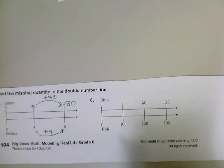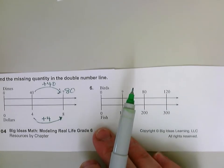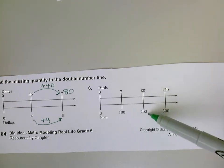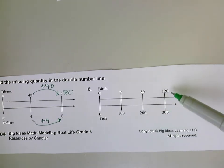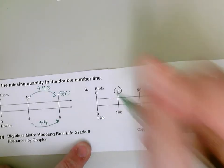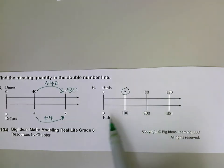Okay, let's take a look at birds to fish. Birds to fish. It looks like for every 80 birds, there's 200 fish. For every 120 birds, there's 300 fish. So I'm going to kind of look and see. I'm looking for this number here. So it looks like I'm going to have to get smaller. I'm looking at my pattern.